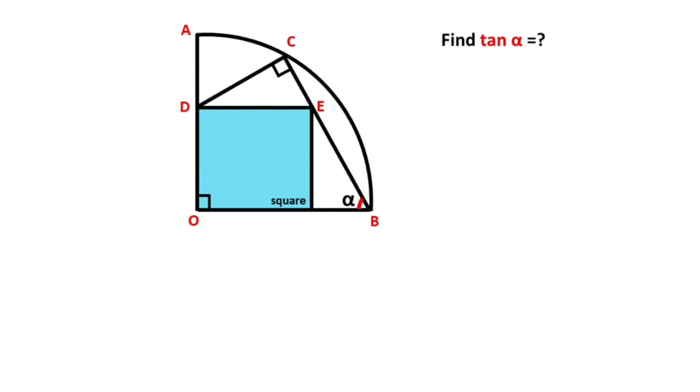Hello everyone. In this video we have one square, one quadrant circle with point O as the center, and angle DCB is given as 90 degrees. The question is: what is the tangent of angle alpha?